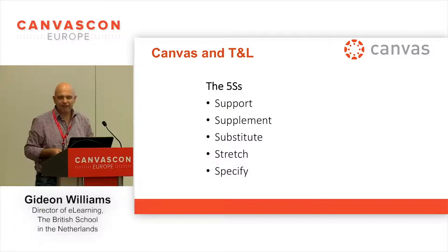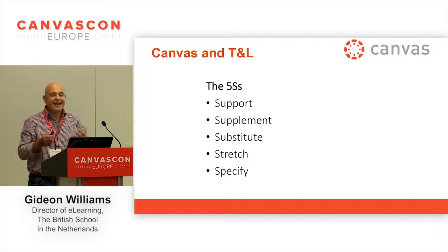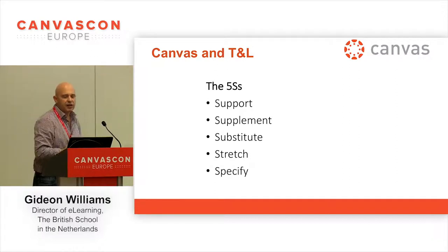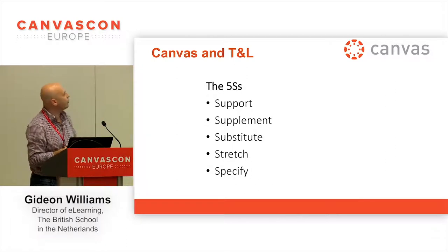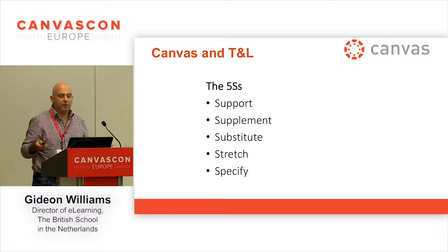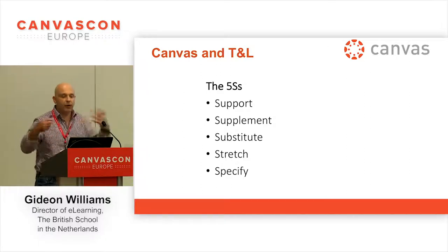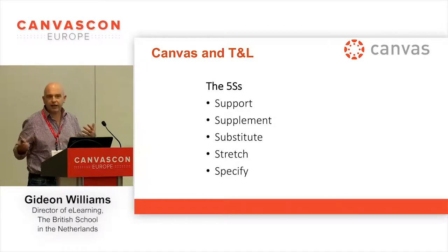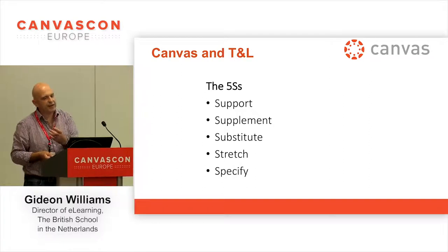These are the five S's that we aim for Canvas to support in the classroom. Supporting what we do, supplementing it either in the class or outside, substituting things that we know work better and quicker and can be replicated more easily, and stretching it through extension tasks and specific aspects.